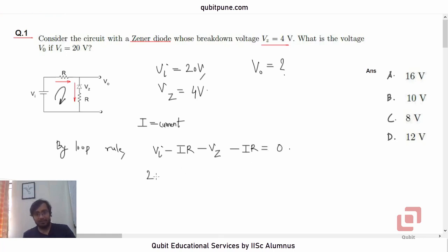What is Vi? 20. Current is, okay, we don't know the current now. We also don't know the resistance. But note that the term IR is appearing twice. So it will be minus 2IR. And then minus Vz.